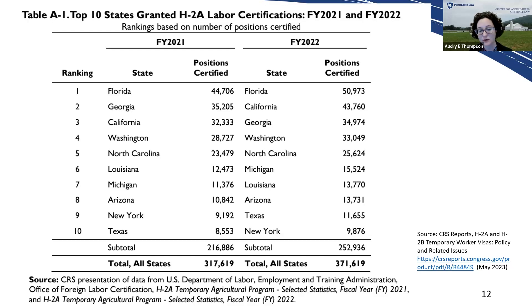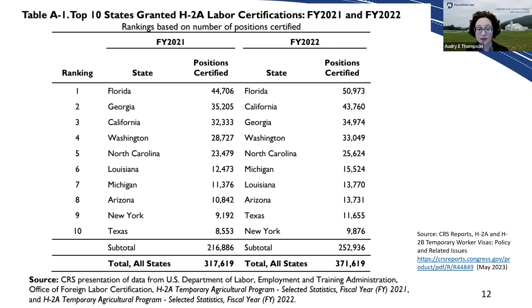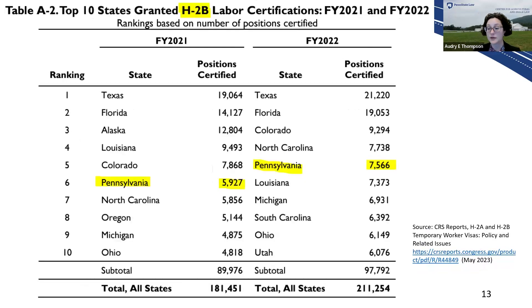Florida by far has the most H-2A visas with 44,700 in 2021 and almost 51,000 in 2022. Georgia and California are battling for second place. California had 32,000 visas in 2021 and then jumped to 43,760 in 2022 — a pretty big jump, possibly COVID-related. Other top states include Washington, North Carolina, Louisiana, Michigan, Arizona, Texas, and New York. These ten states together comprise about 68% of all H-2A visas nationwide. Pennsylvania is not in the top H-2A list but is in the top ten for H-2B visas, which tends to be used for dairy work in our state.